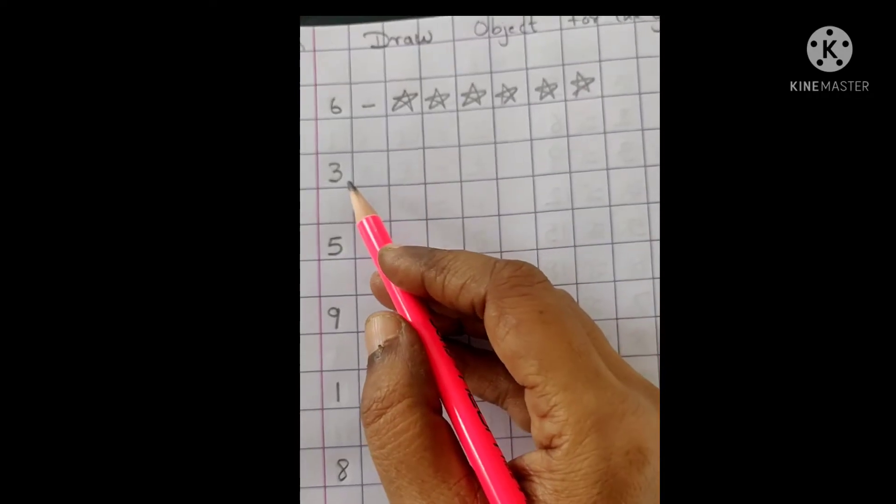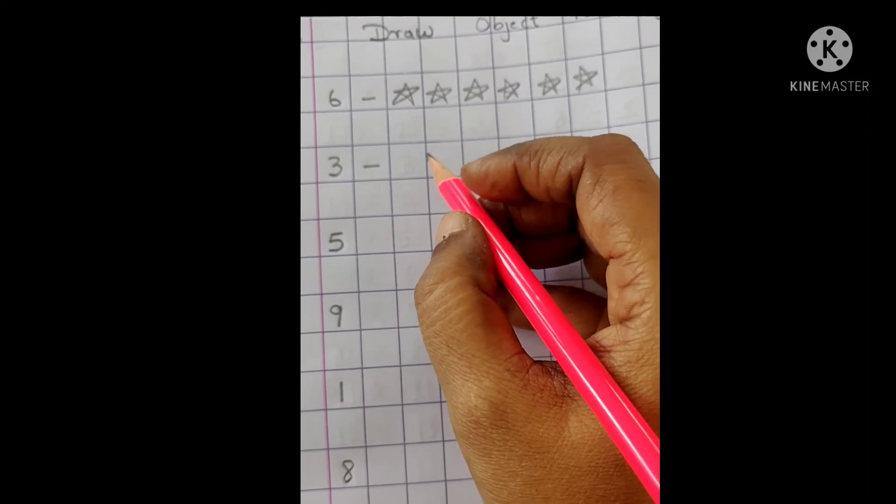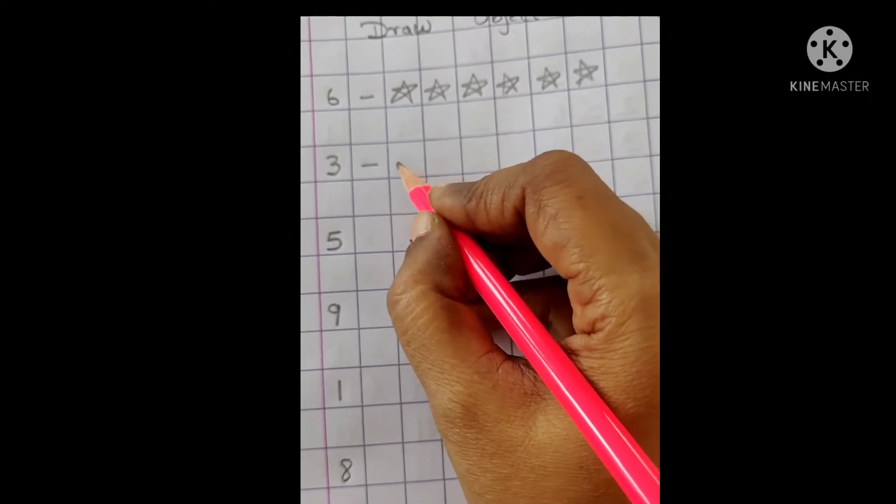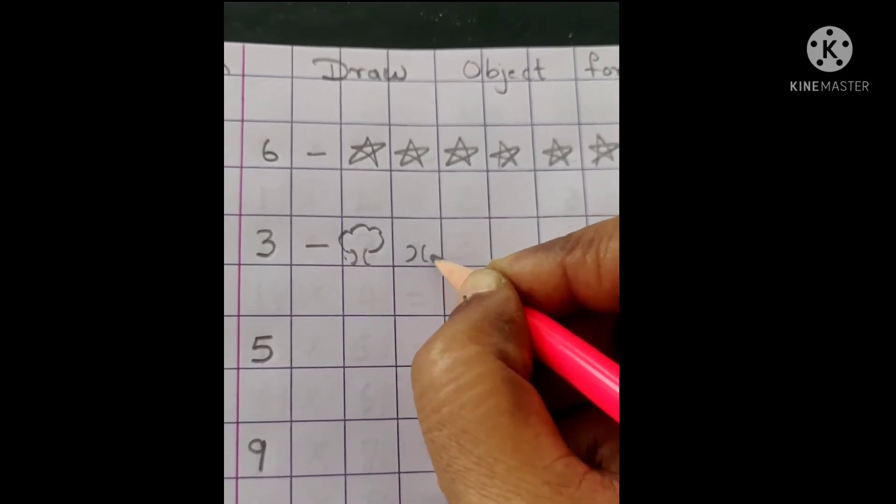Now, next again. Here is number 3. Draw small dash. What we will draw? We will draw 3 trees. 3 trees. Okay, 3 trees.